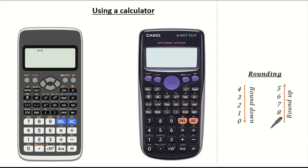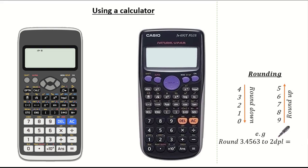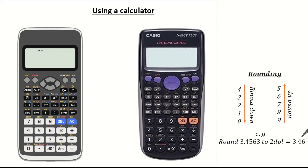So let's have a look at an example so you can see what I mean. Here we're asked to round 3.4563 to two decimal places. Now the second decimal place is the 5, so we're looking at the 6 because it's the digit to the right to tell us if we need to round up or not. Because it's a 6 that means we round up, so our answer is 3.46 to two decimal places.